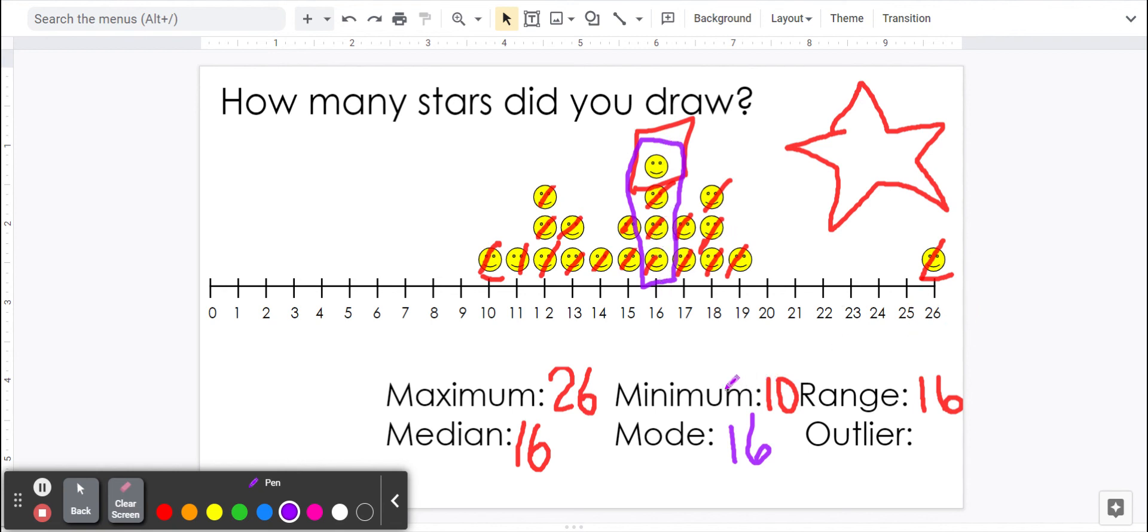All right, outlier. If you notice, these responses are super close together. They're all kind of chunked. This one off to the side, that's an outlier. It's kind of far out there. It's different from the rest.